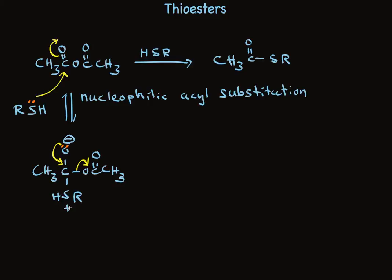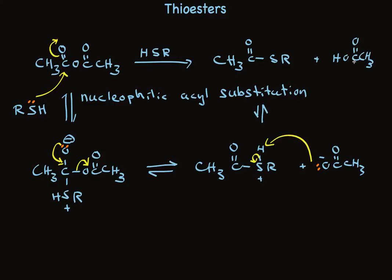There's a plus charge on that sulfur. These are all reversible steps. And that acetate that is formed can remove a proton to form the final product. Using anhydrides together with thiols provides good yields of the thioesters.